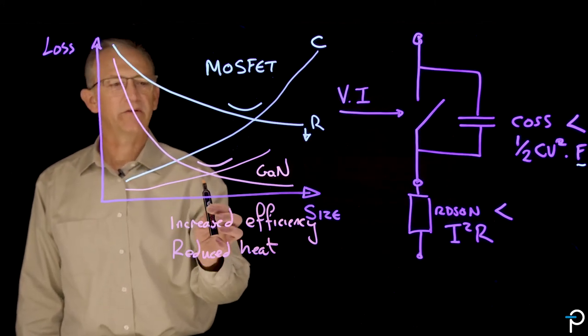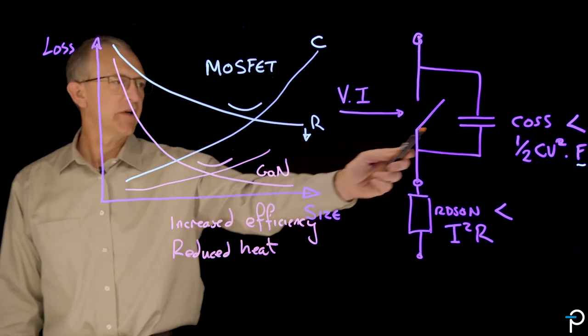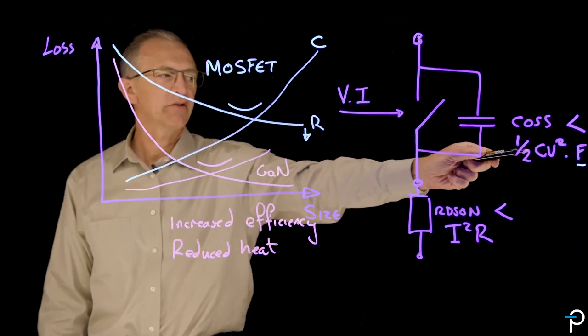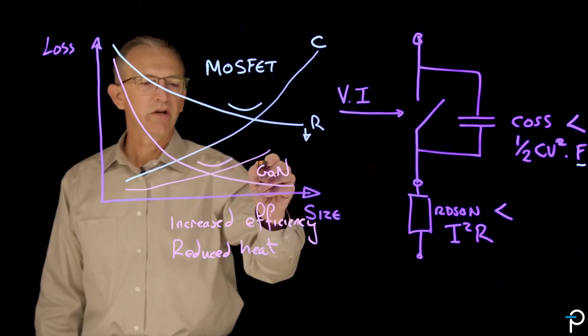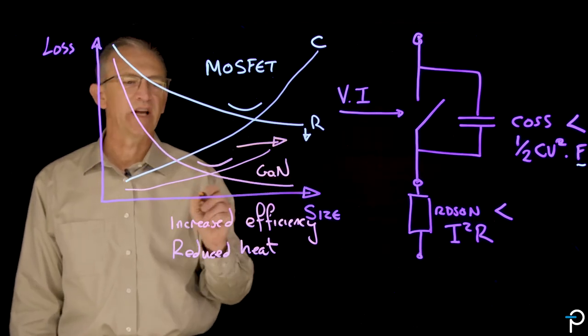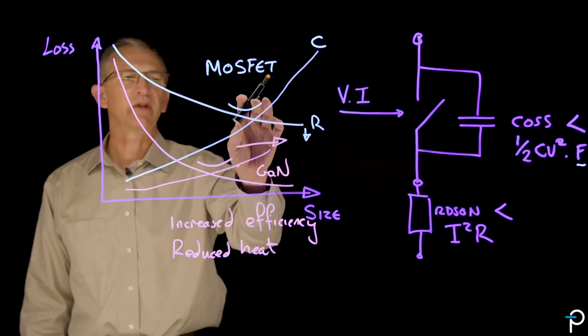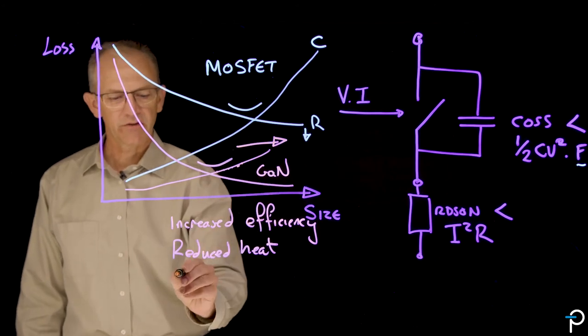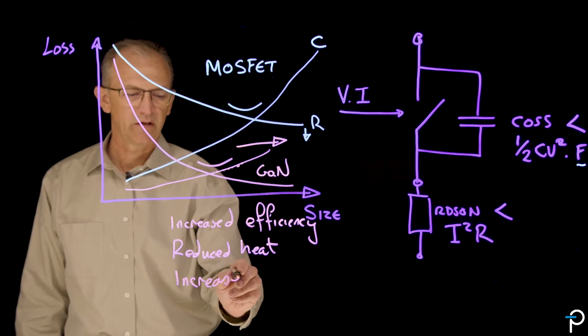And there's another benefit that comes out of this curve. And that is, if you remember, CV squared F has this F component, the losses related to frequency. And that means that if you wish, you can increase the frequency that the GAN switches at, and that moves this crossover point, and it still gets nowhere near where the MOSFET is. And so you can increase switching frequency.